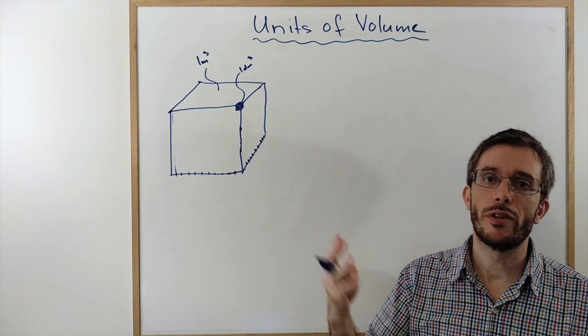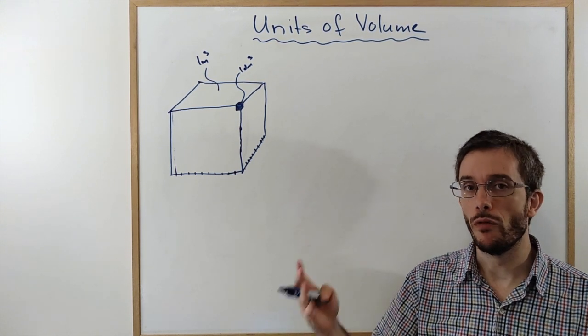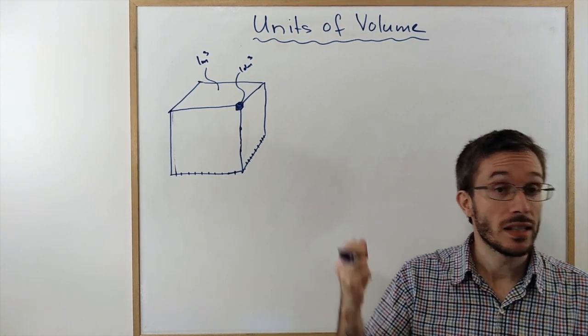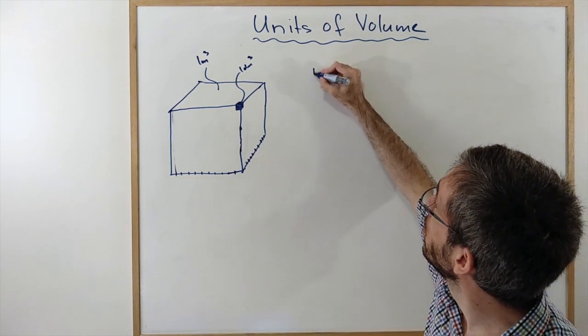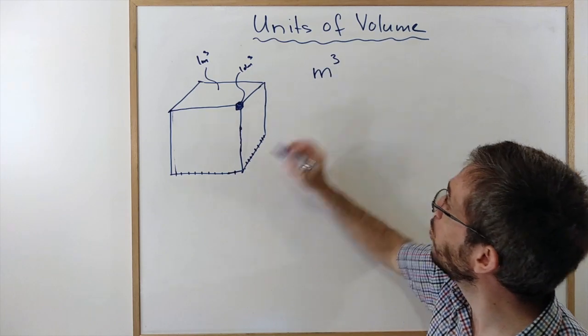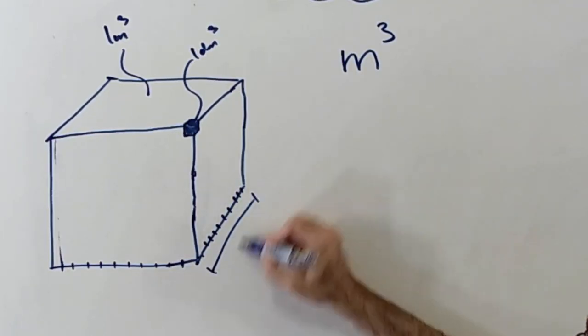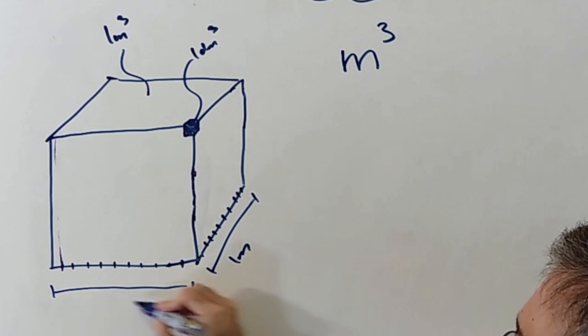Let's talk about some of the different units you could use to measure volume. The SI standard unit for volume would be the meter cube, which is a cube with a length of 1 meter.